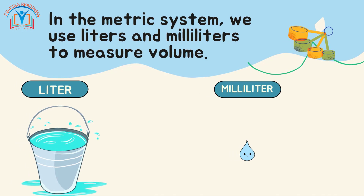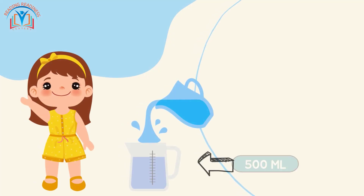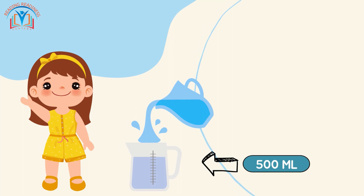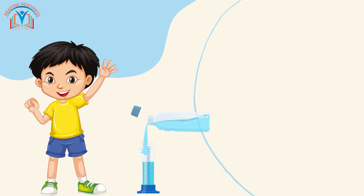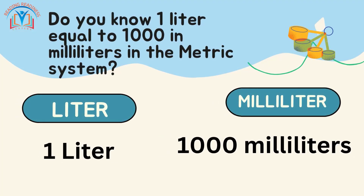A liter is like a big container of water, and a milliliter is a tiny drop of water. Emily poured water into her measuring cup and found that it can hold 500 milliliters. Max poured water into his measuring cylinder and found that it can hold 0.5 liters of water. Did you know one liter equals 1,000 milliliters in the metric system?